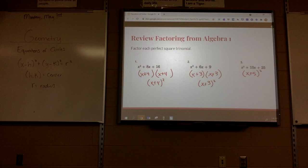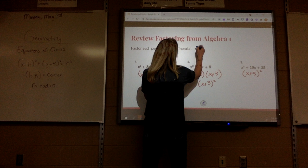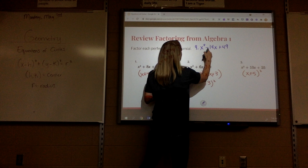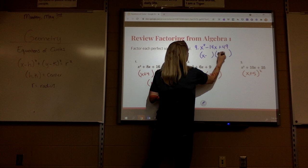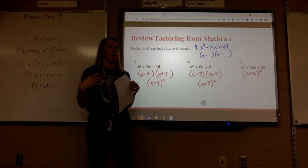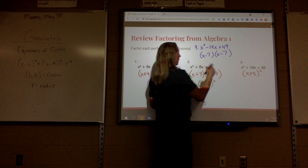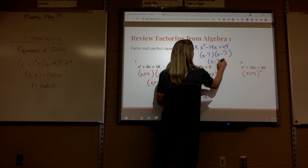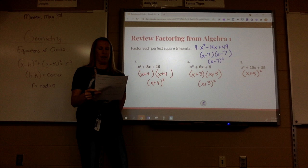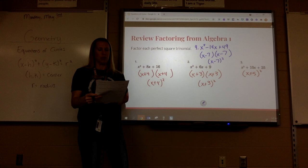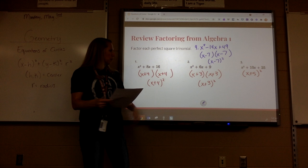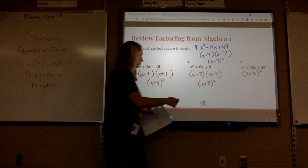On number 4, this says x squared minus 14x plus 49. Since there's a minus sign, it's going to be minus, minus. A negative times a negative is a positive. What two numbers multiply to be 49 but add to be 14? 7. So it's x minus 7 squared. Number 5 would be x minus 1 quantity squared. And number 6 would be x minus 4 quantity squared.